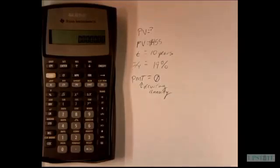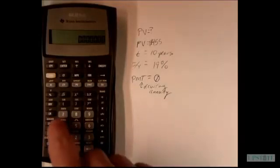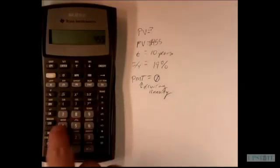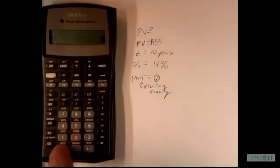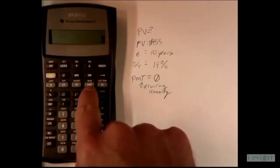So we're going to enter this stuff into our calculator. We know we have a future value of 455, so we enter 455 and hit future value. And then we have a zero as our payment, so zero payment.